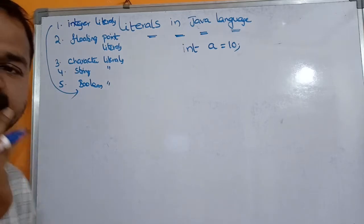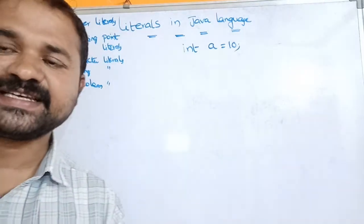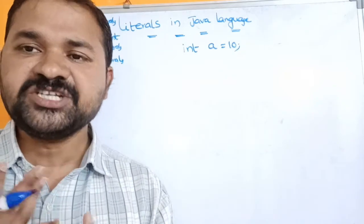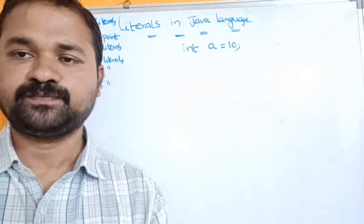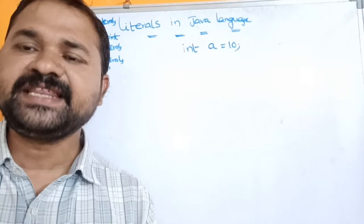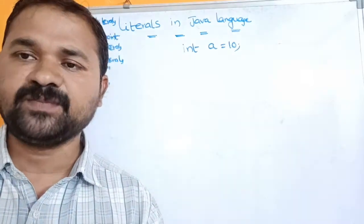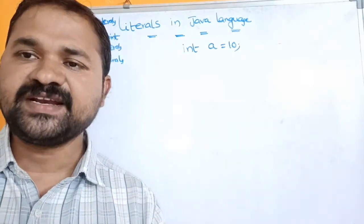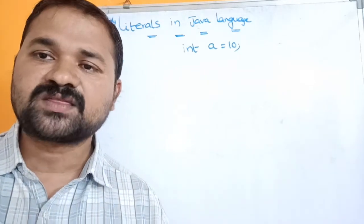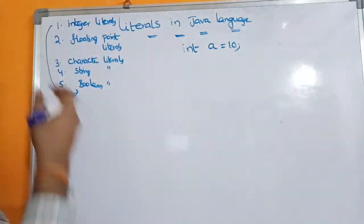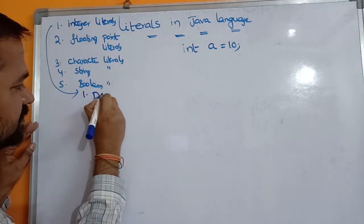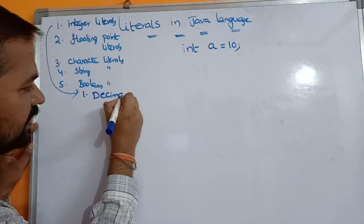The first one is integer literals. The name itself specifies the meaning — integer literal means it accepts integer values. There are mainly three types of integer literals: first, decimal literal; second, octal literal; third, hexadecimal literal.